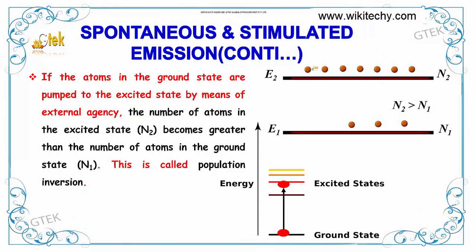If the atoms in the ground state are pumped to the excited state by means of external agency, the number of atoms in the excited state is greater than the number of atoms in the ground state. You can see 1, 2, 3, 4, 5, 6, 7 versus 1, 2, 3. This is called population inversion.